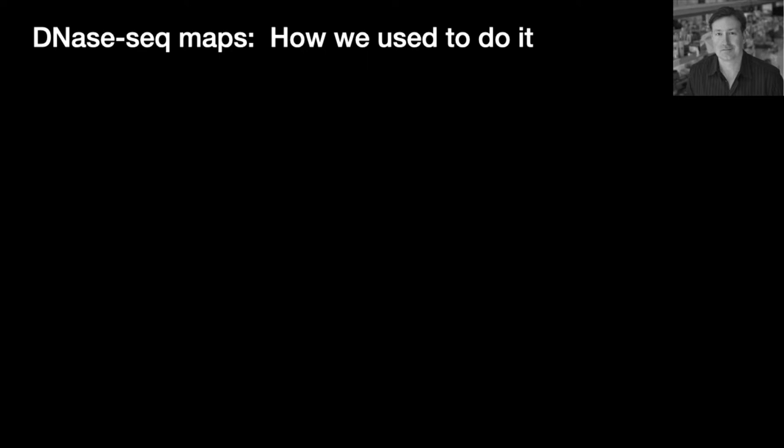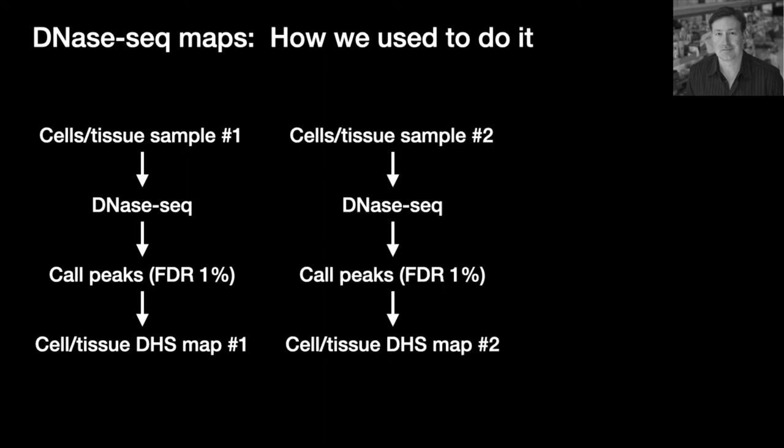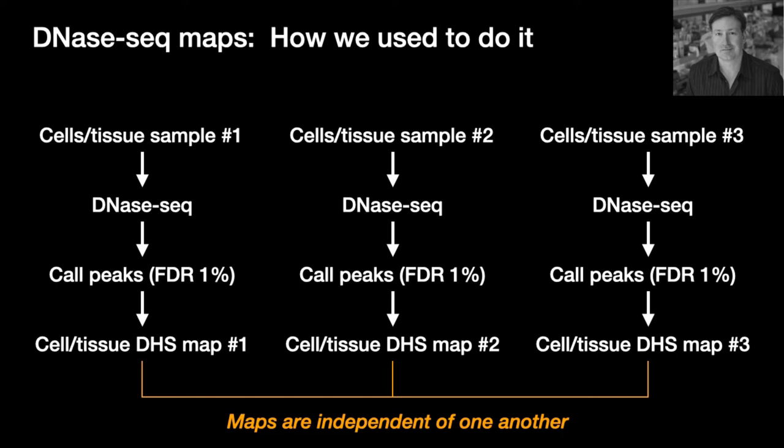So for DNase-seq maps, essentially what would happen is that we'd get a cell and tissue sample, we'd perform DNase-seq, we'd call peaks, and create a map for a given cell type, and then we would do this over again for another cell type or tissue and another one. So essentially all of these maps were independent of one another.